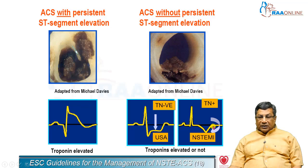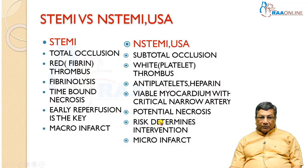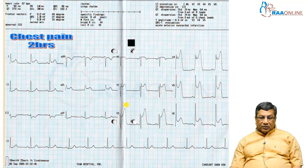When a patient comes with either ST segment depression or symmetrical T wave inversion with one to two days of chest pain, this is non-ST elevation ACS. Non-ST elevation ACS is divided into unstable angina or non-ST elevation MI depending on troponin: if troponin is positive it is called non-ST elevation MI; if negative it is unstable angina. Only the troponin distinguishes MI from unstable angina, not the ECG alone. In STEMI it is thrombolysis or PCI; in unstable angina or NSTEMI, risk determines the intervention. Thrombolysis in ECG depression increases mortality.